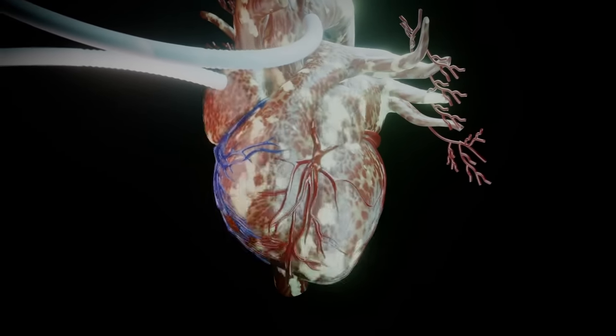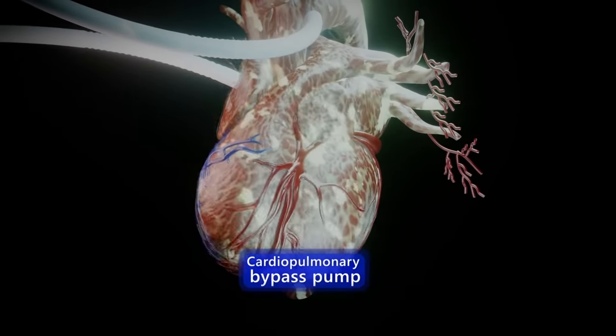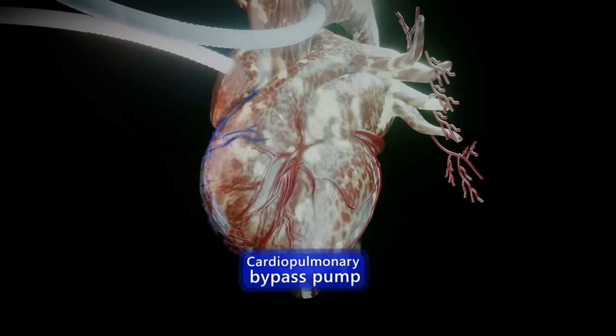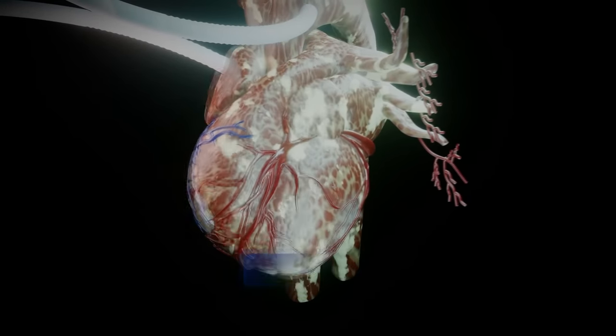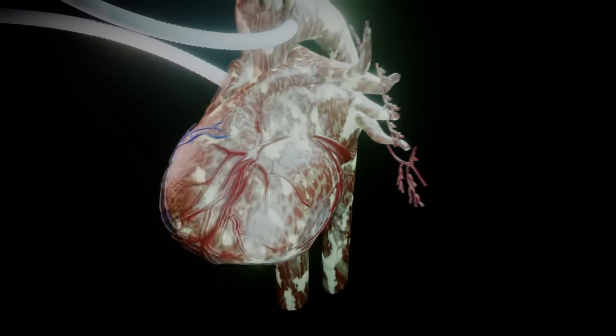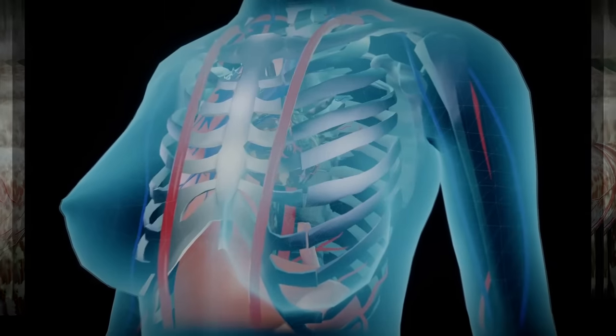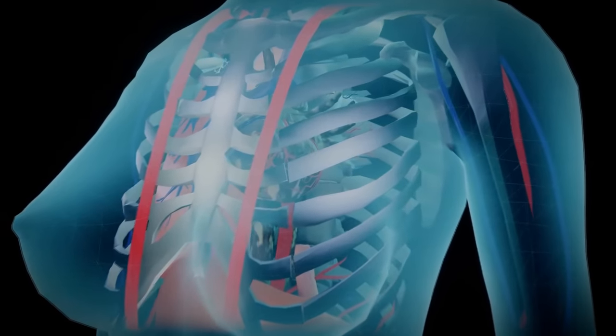your circulatory system will be connected to a cardiopulmonary bypass pump, or heart-lung machine. This machine temporarily takes over the functions of the heart and lungs during surgery,